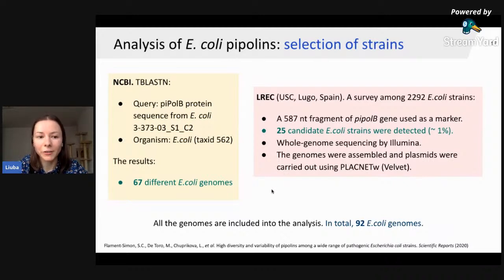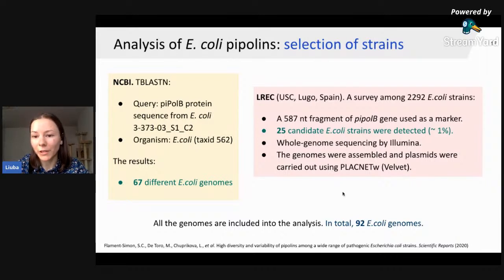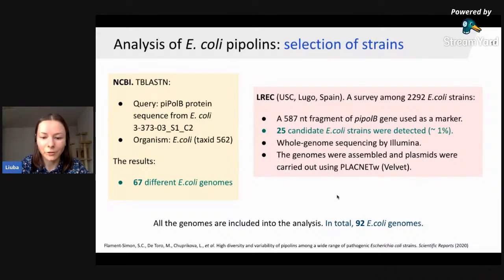We also had access to a large collection of E. coli strains from the Spanish Reference Laboratory of E. coli, in collaboration with the University of Santiago de Compostela in Spain. They have a large collection of strains isolated from across Spain, including from wild and domestic animals, environmental samples, and clinically relevant samples. After sequencing more than 2,000 strains from this collection, we detected 25 additional candidates, giving a total of 92 E. coli genomes included in the analysis.